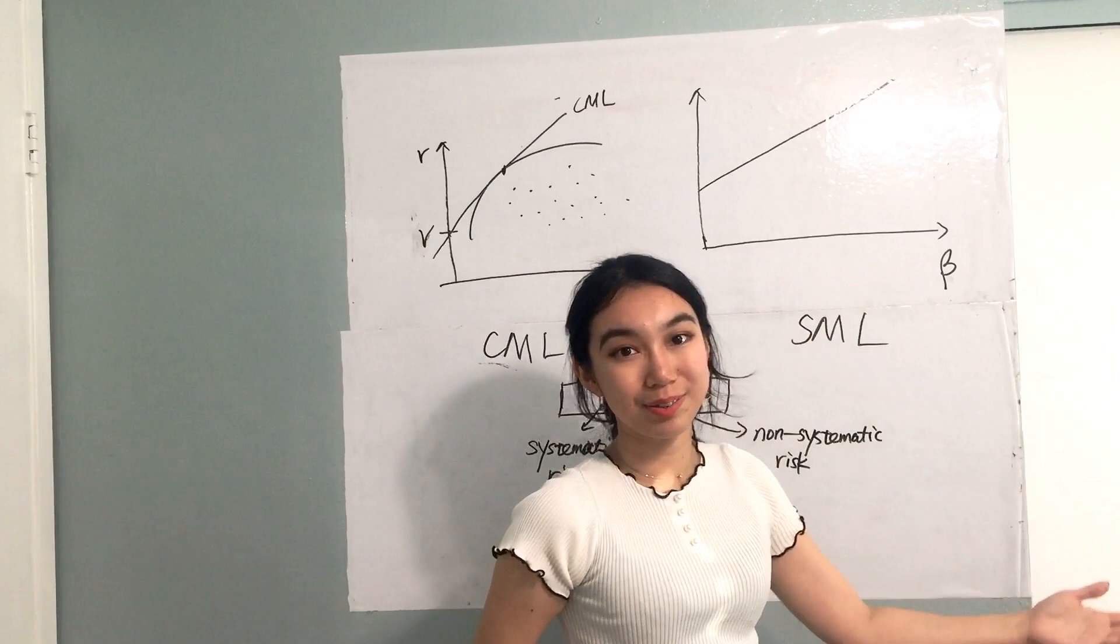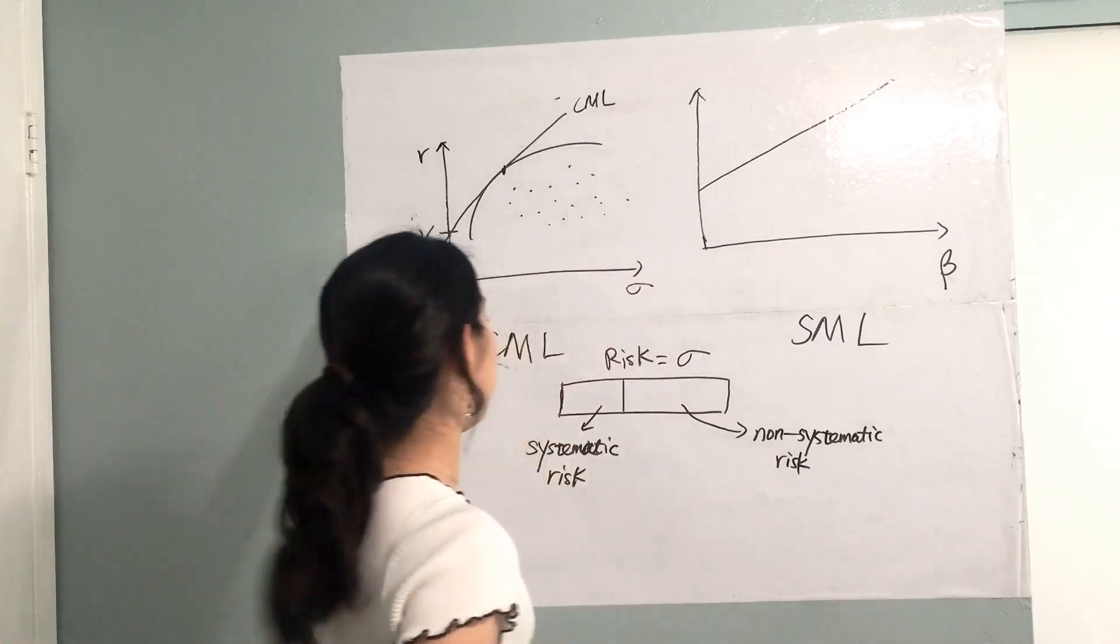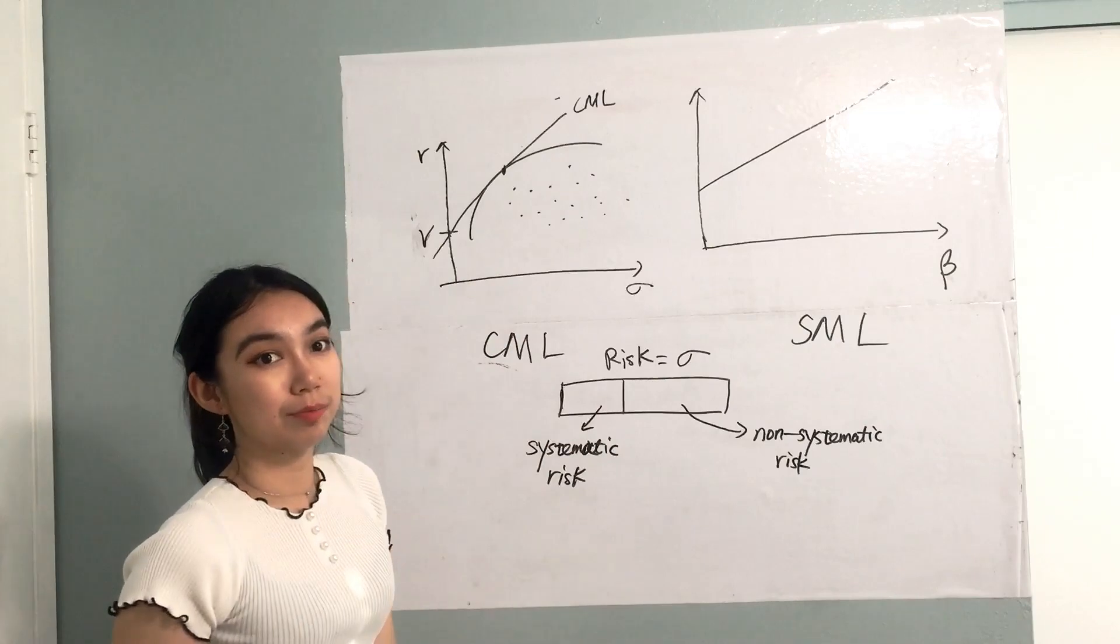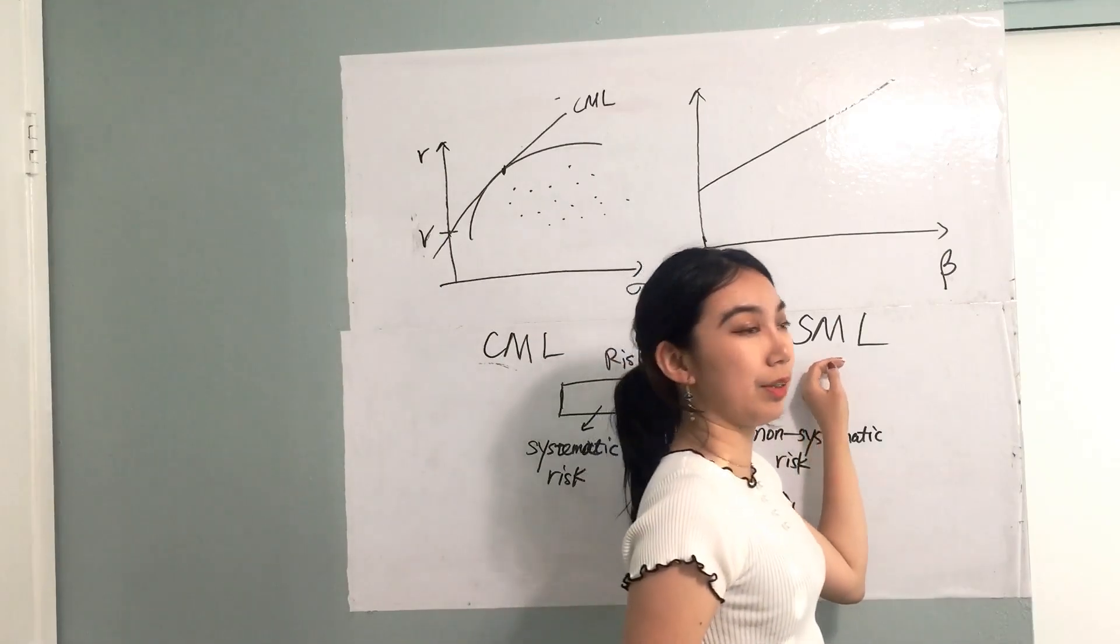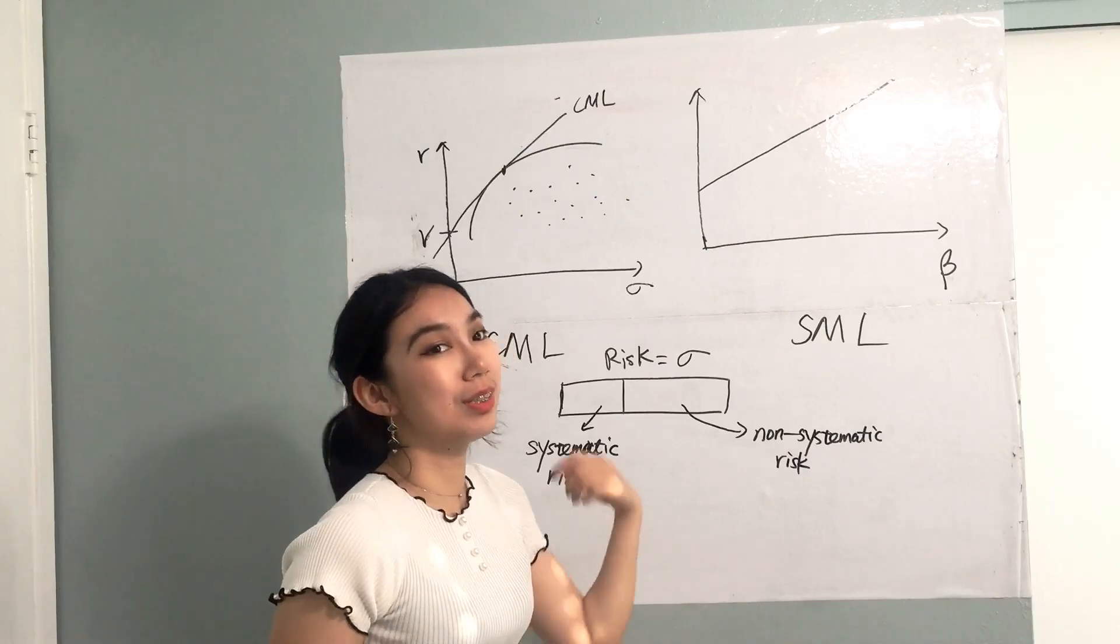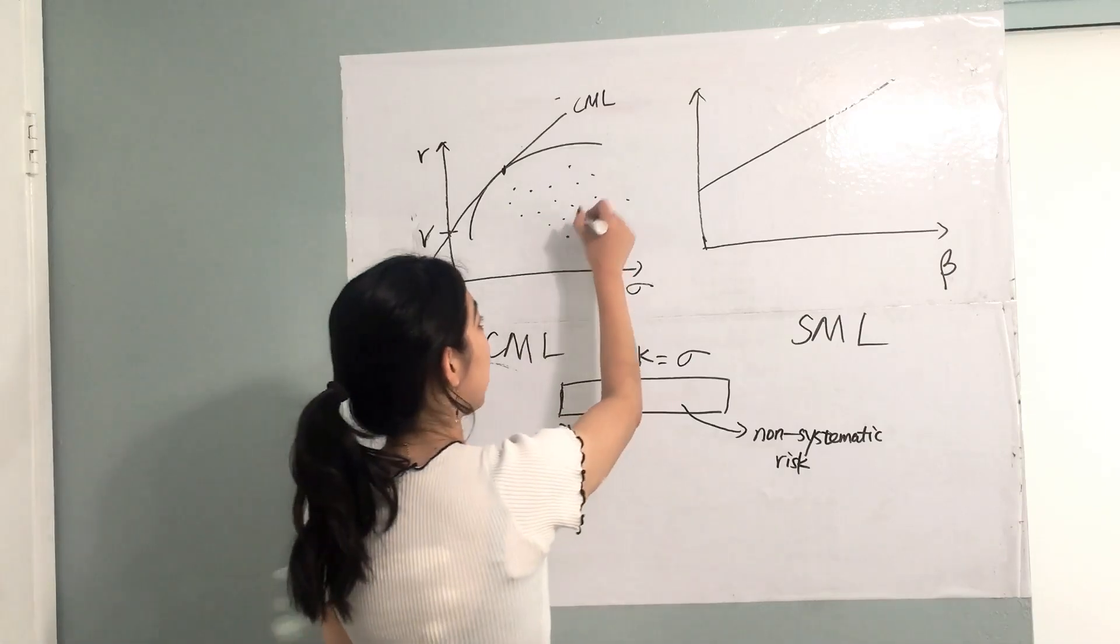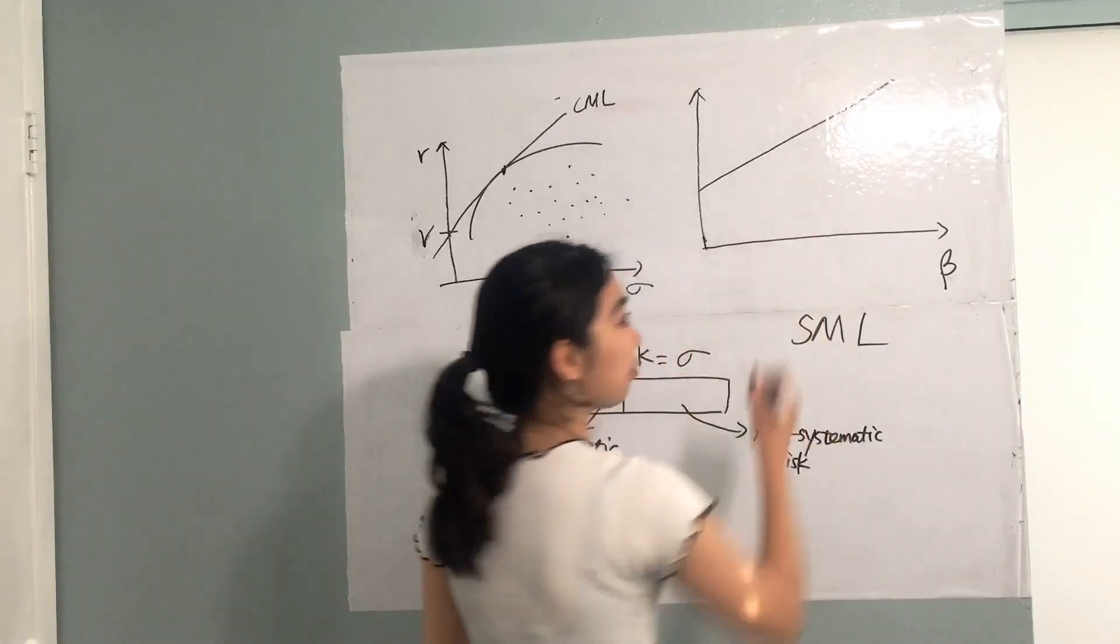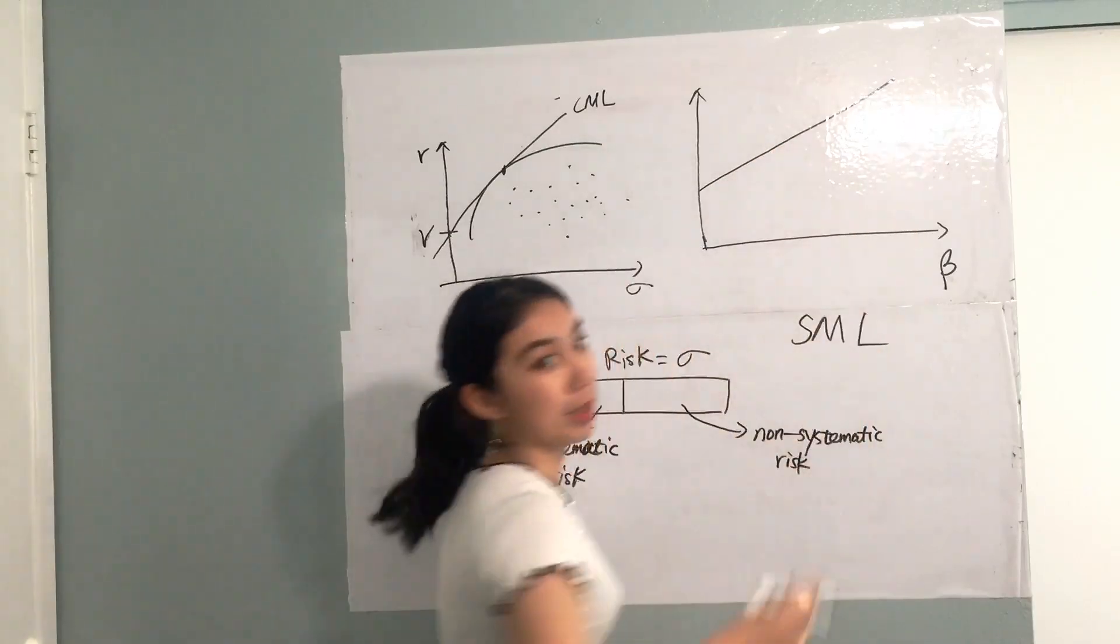So now let's compare the capital market line and security market line. The capital market line only talks about the efficient portfolios in the market, which is the optimal combination of risk and return. But for the security market line, every stock, every investment has a beta, which is the stock or the portfolio sensitivity to the market. So for each of the portfolios in the market, we can match a beta here, and all of these portfolios can be mapped on the security market line.